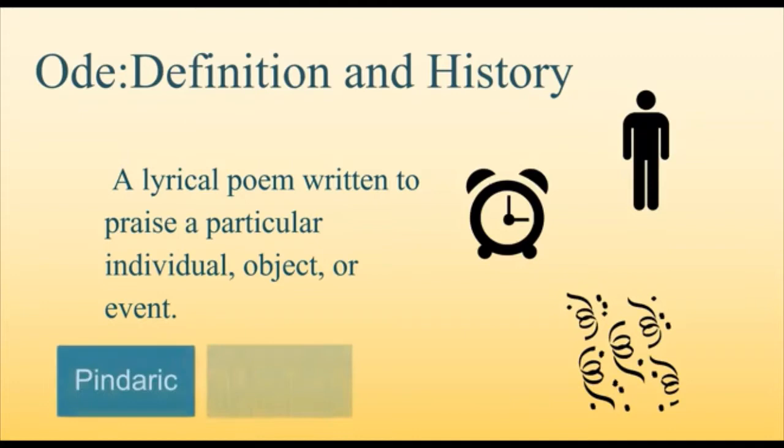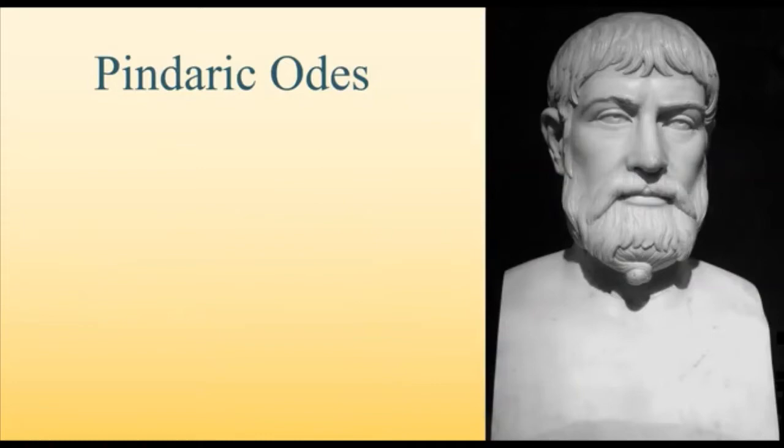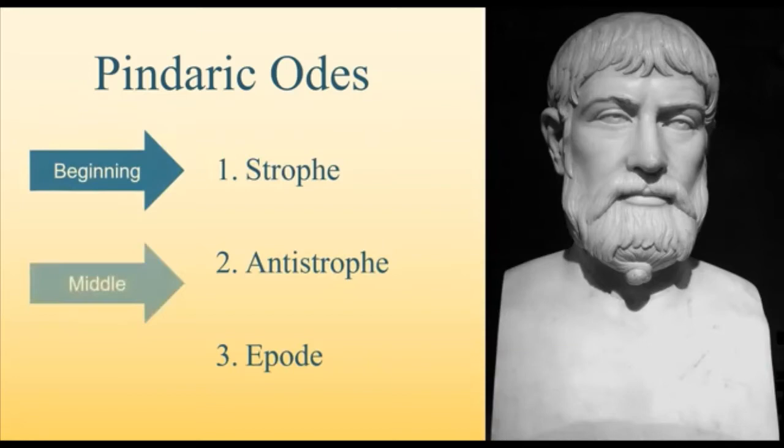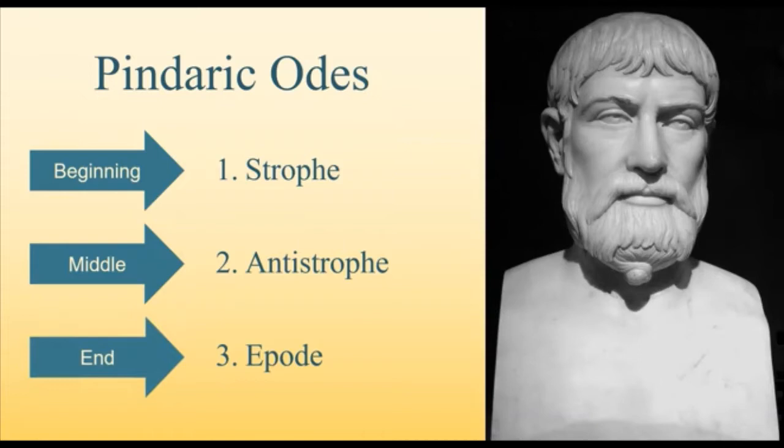Pindaric odes are named after the poet Pindar, who enjoyed theatrical performances of his odes, which were usually about topics like Olympic athletes or feats of heroism. These poems have three sections — the strophe, antistrophe, and epode. Think of it like an introduction, body section, and conclusion. While the strophe and antistrophe have the same meter and length — usually a quatrain — epodes typically deviate with a different meter and length.